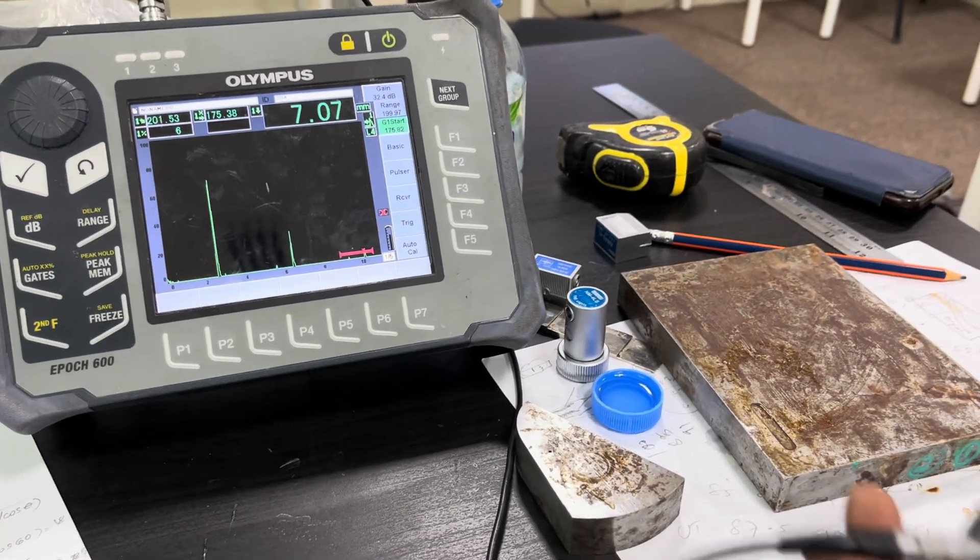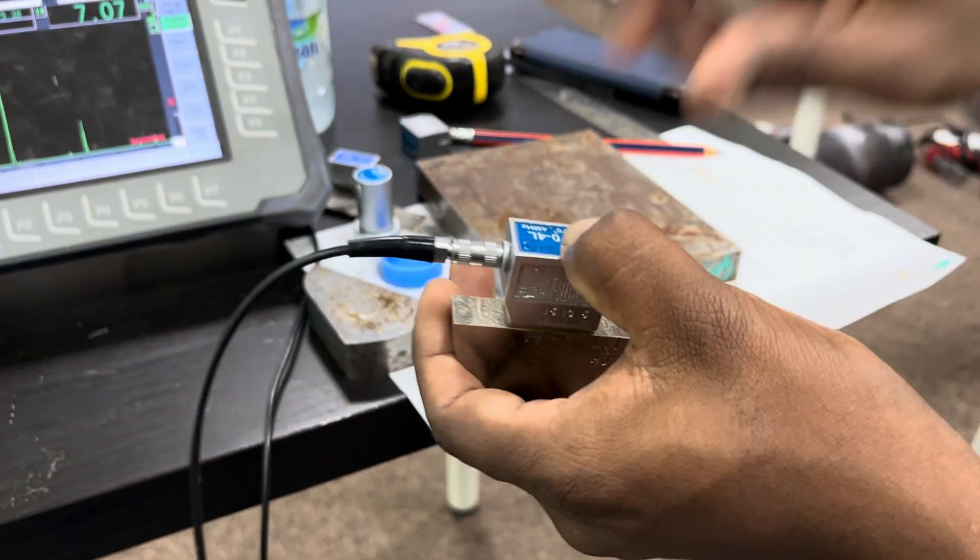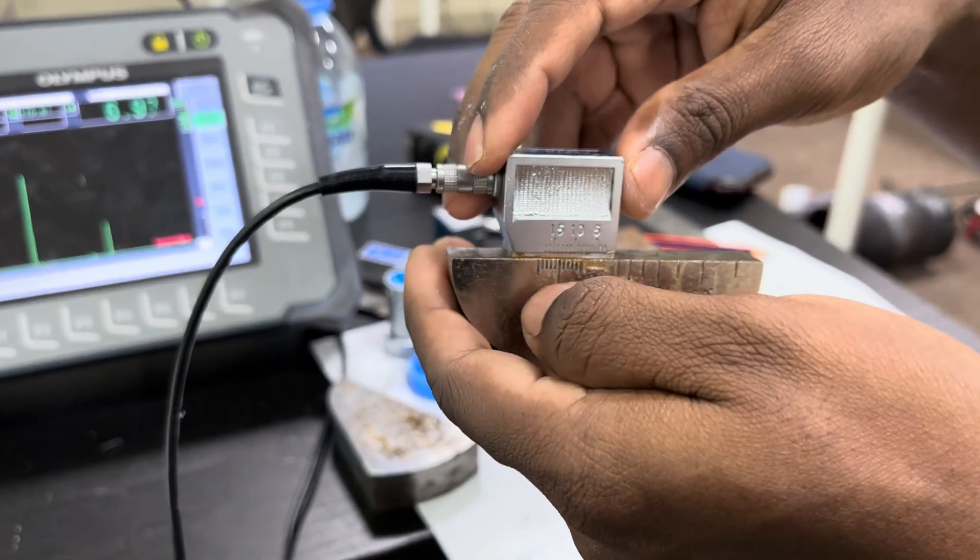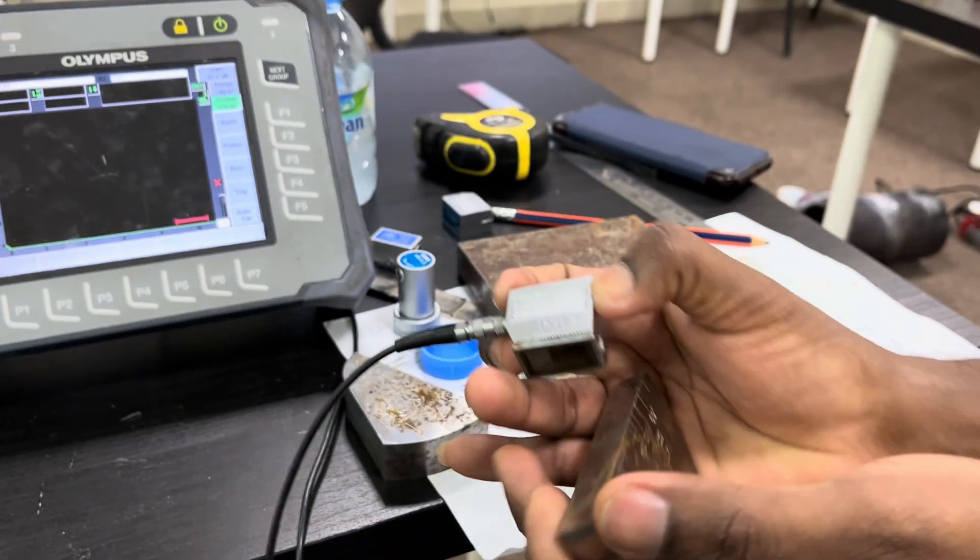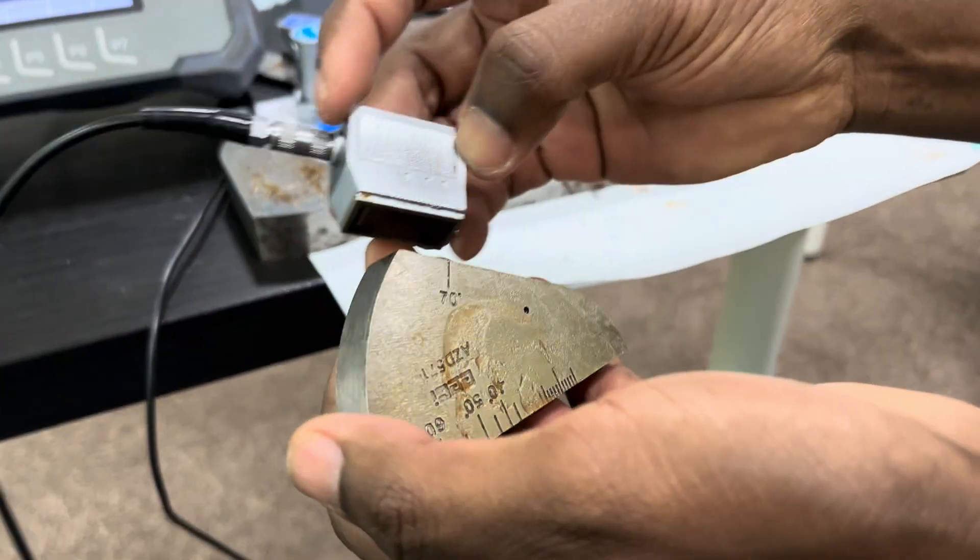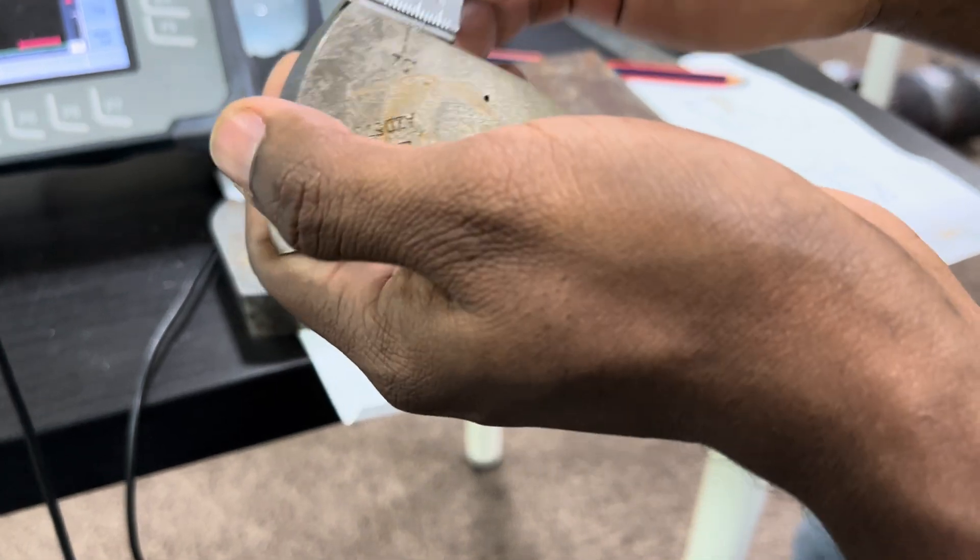It's coming here. Now I am going to verify the angle of the beam and probe sensitivity. The angle is 70 degrees, so I am going to match the index value with the angle in the V2 block.